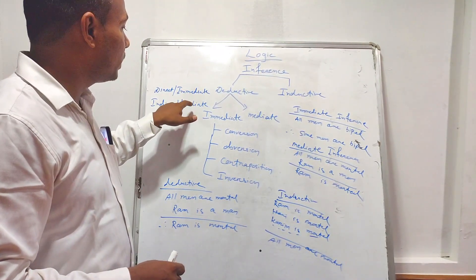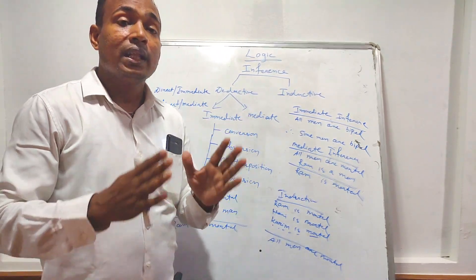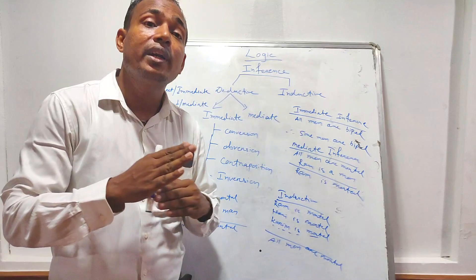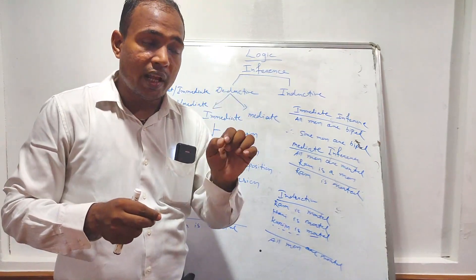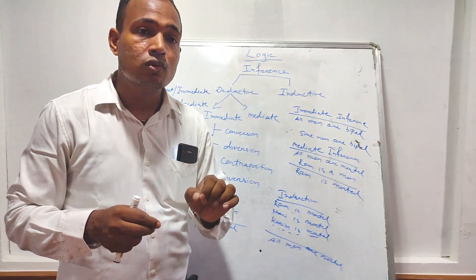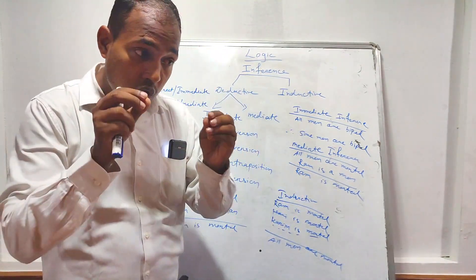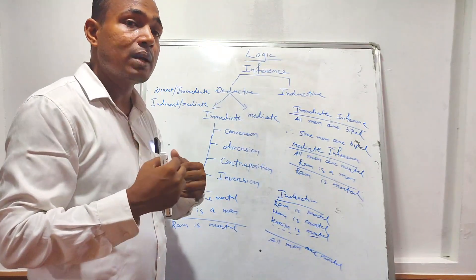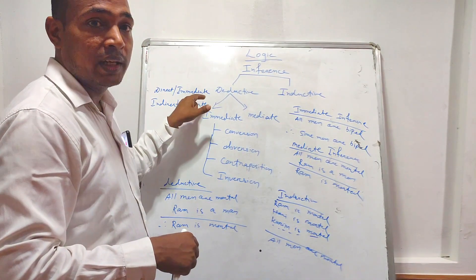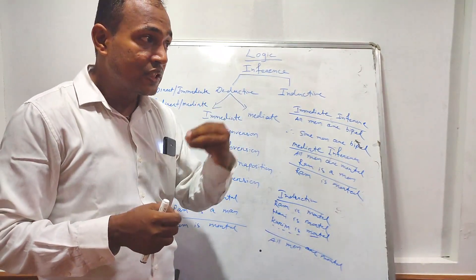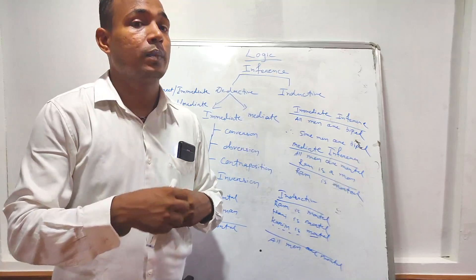Direct or immediate knowledge is the knowledge which comes to mind without any via media. For example: 'I saw a cow grazing in the grass field.' To know about the cow, I don't depend on anything else — that is direct or immediate knowledge.